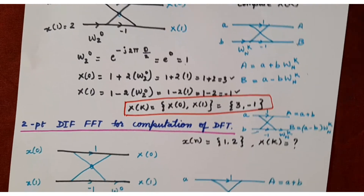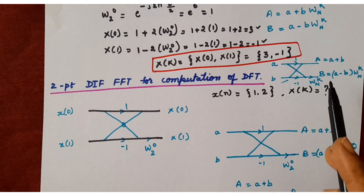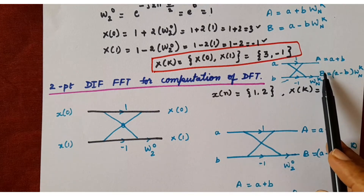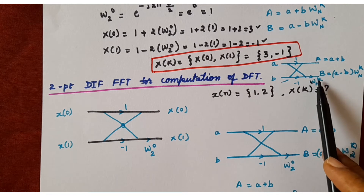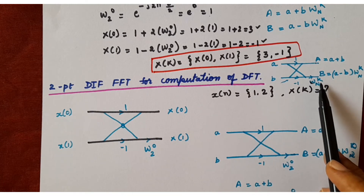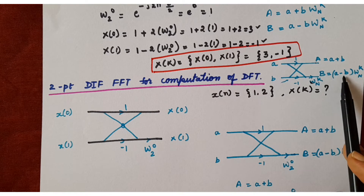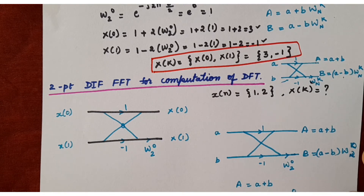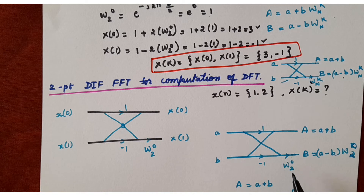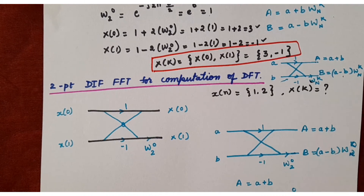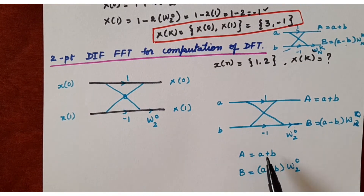Now coming to DIF. The DIF butterfly diagram has input variables A and B, and output variables capital A and capital B. The twiddle factor is written at the end of the bottom line as W_N^K. The output equation for the first line is A + B, and for the second line is (A − B)·W_N^K. For two points, the twiddle factor is W_2^0, so capital A = A + B and capital B = (A − B)·W_2^0.